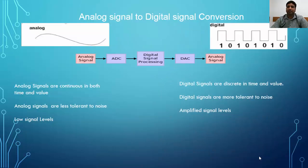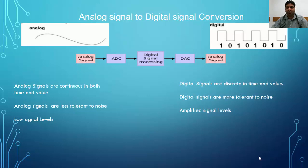So far we have seen digital processors, types of digital processors, and their history. There might be a question raised: what is the need to process signals digitally, or to convert analog signals to digital? Digital signals are discrete in time and value when compared to the continuous nature of analog signals. My discussion was limited to standalone systems, computers. Other than in computers, there are certain advantages of digitally processed signals.